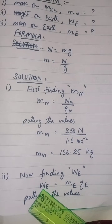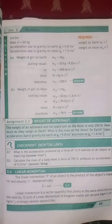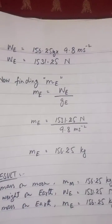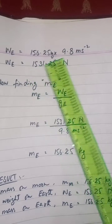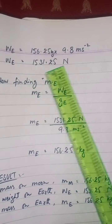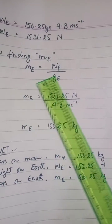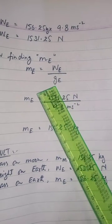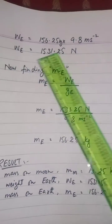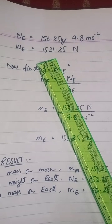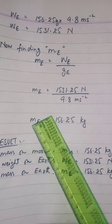For weight on earth: we equals me × ge. Putting the values: 156.25 multiplied by 9.8 gives 1531.25 Newton. Now for mass on earth: me equals weight on earth divided by ge, which is 1531.25 divided by 9.8.